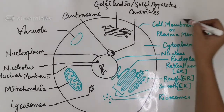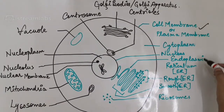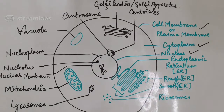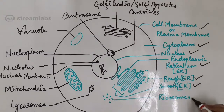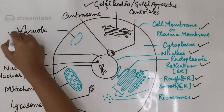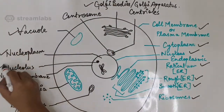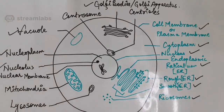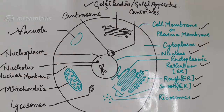These cell organelles — that is the cell membrane, cytoplasm, nucleus, endoplasmic reticulum, rough ER, smooth ER, ribosomes, Golgi bodies, vacuole, nucleoplasm, nucleolus, nuclear membrane, mitochondria — are common to the plant cell.